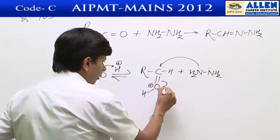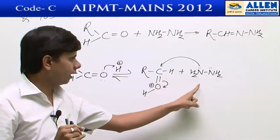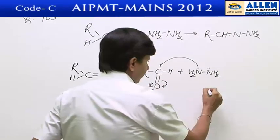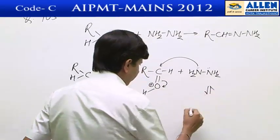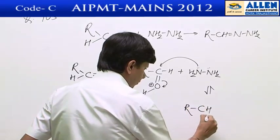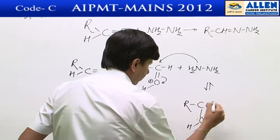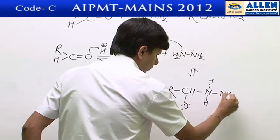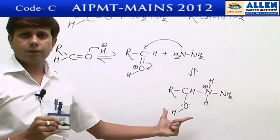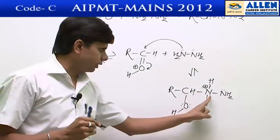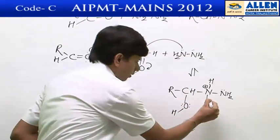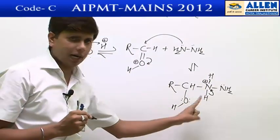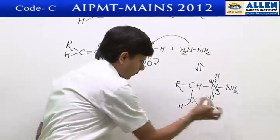The attack of the nucleophile on the protonated carbonyl compound forms a new species. In this species, the positively charged nitrogen atom gets neutralized by releasing a hydrogen atom in the form of a proton, and that proton gets attached to the oxygen atom which has a lone pair.